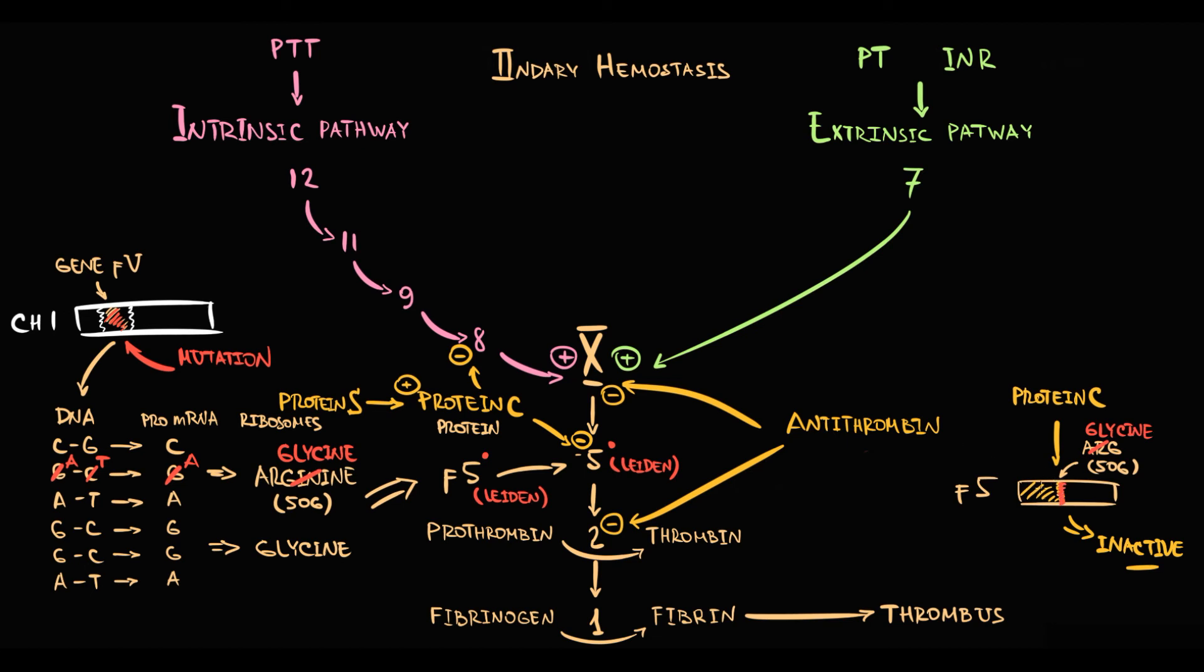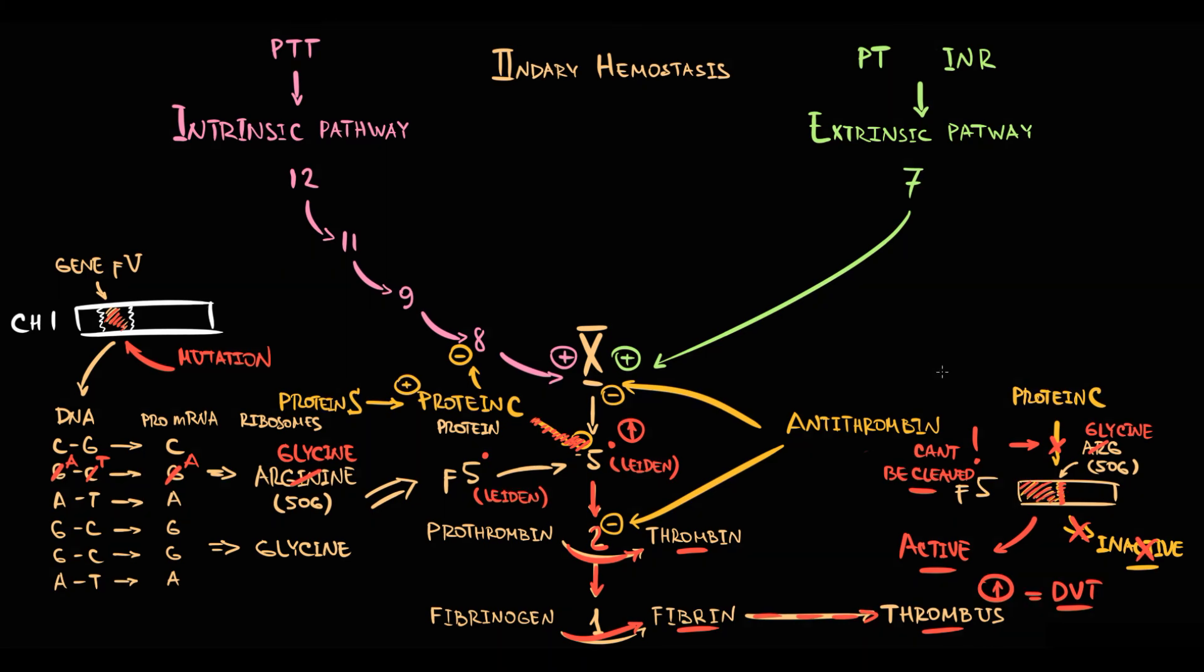The problem with factor V Leiden is that with this substitution protein C cannot recognize the cleavage site. So cleavage by protein C becomes impossible, thereby we can say that factor V Leiden is totally resistant to degradation by activated protein C. Massive increase in activated factor V in the circulation creates a prothrombotic state. Because eventually activated factor V will cause activation of factor II and I and this will cause massive formation of thrombi. And usually these thrombi are formed in veins that eventually can cause deep venous thrombosis, cerebral vein thrombosis and also recurrent pregnancy loss.